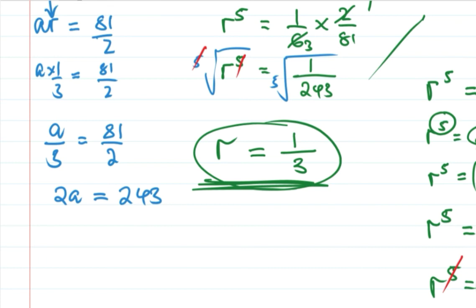Divide both sides by 2. So a equals 243 divided by 2. If you want to express this as a mixed number, 243 divided by 2 is 121 remainder 1, so a equals 121½. This is the first term.